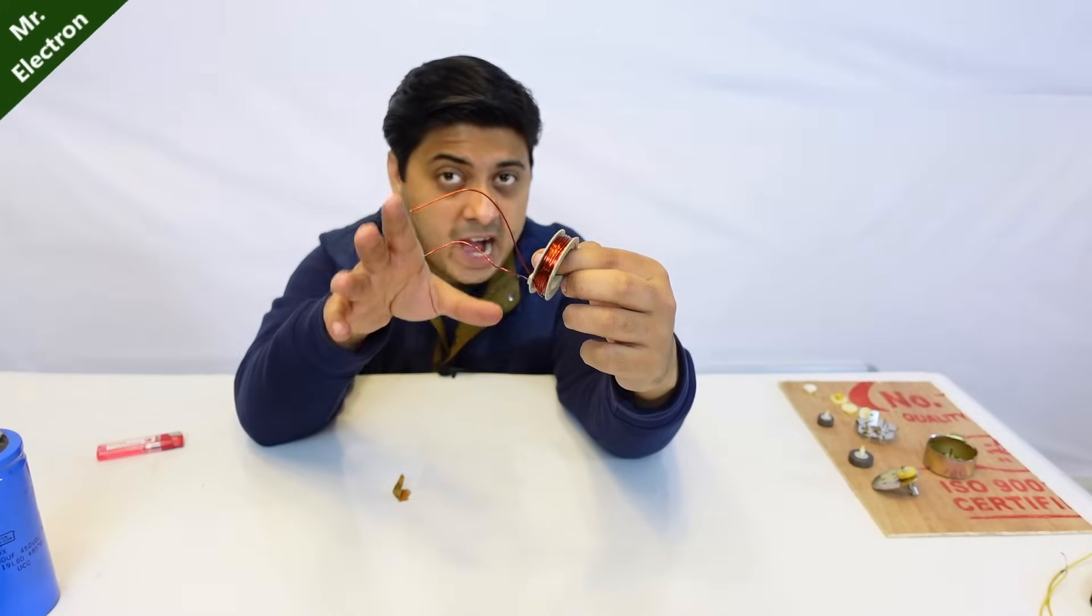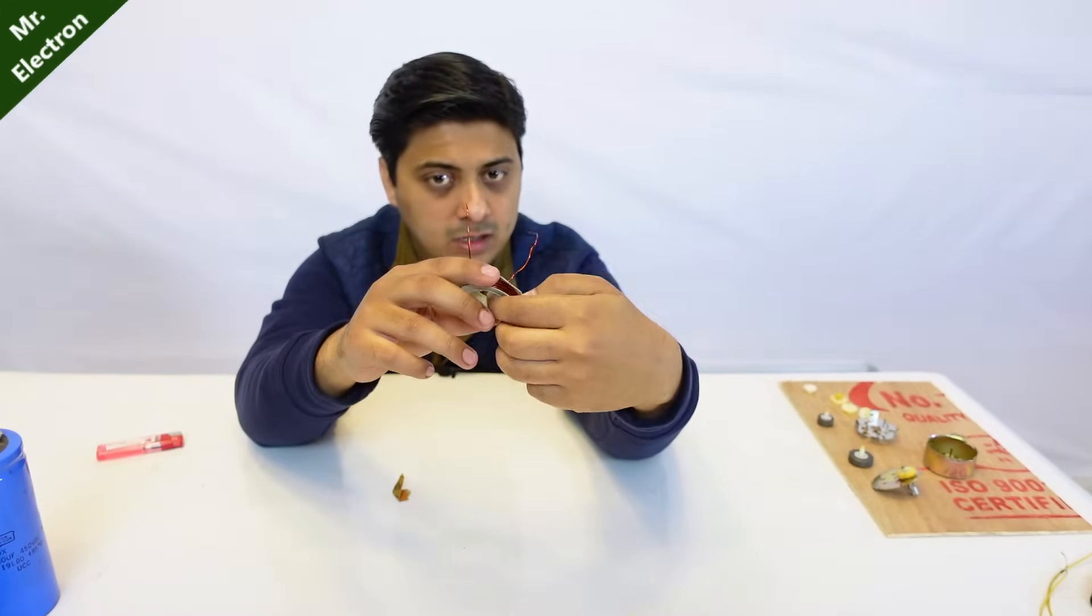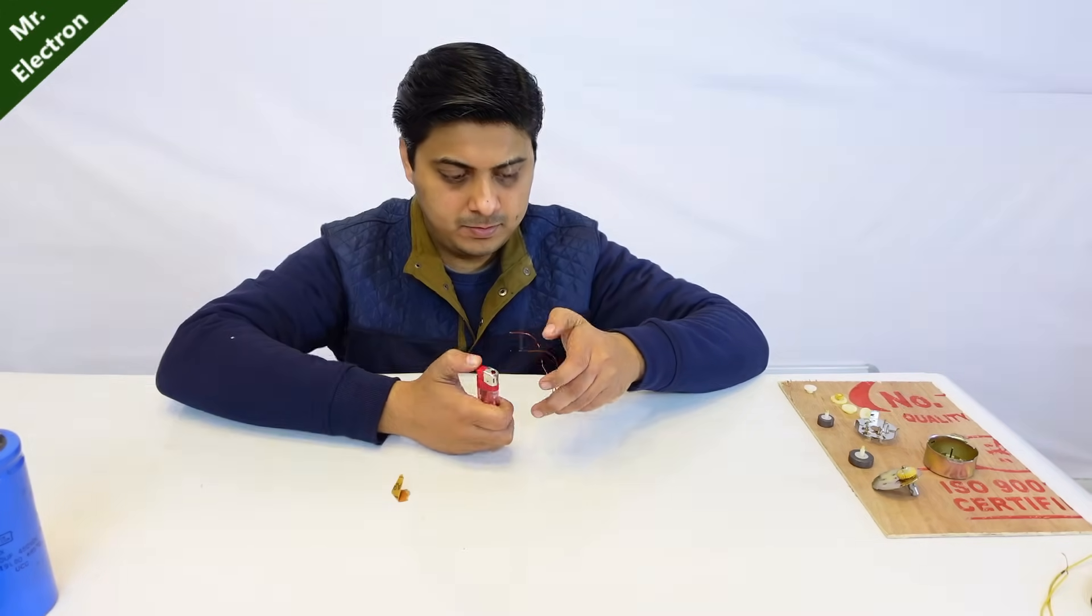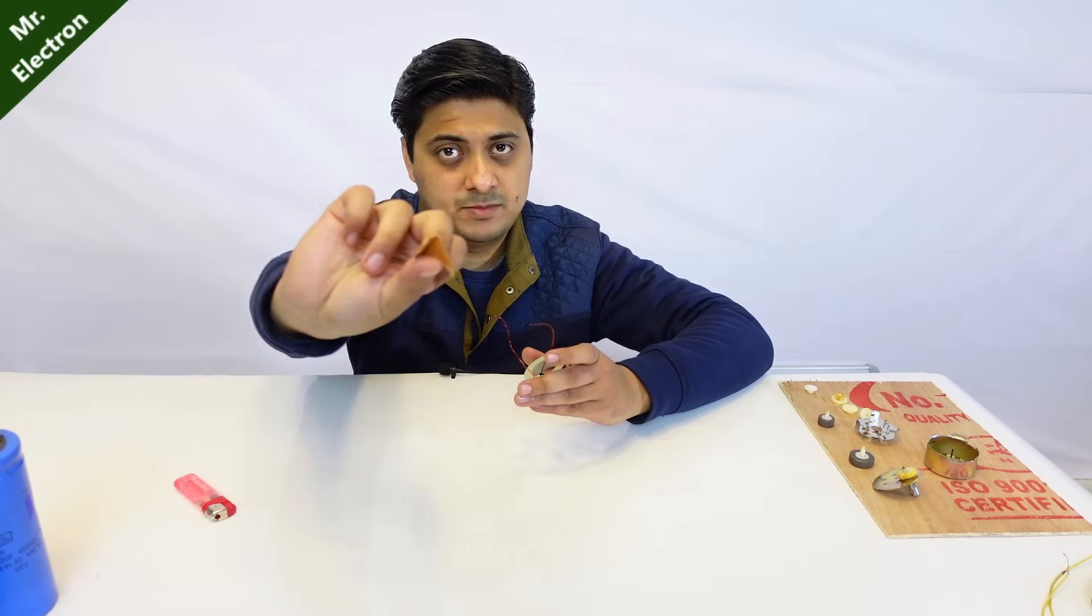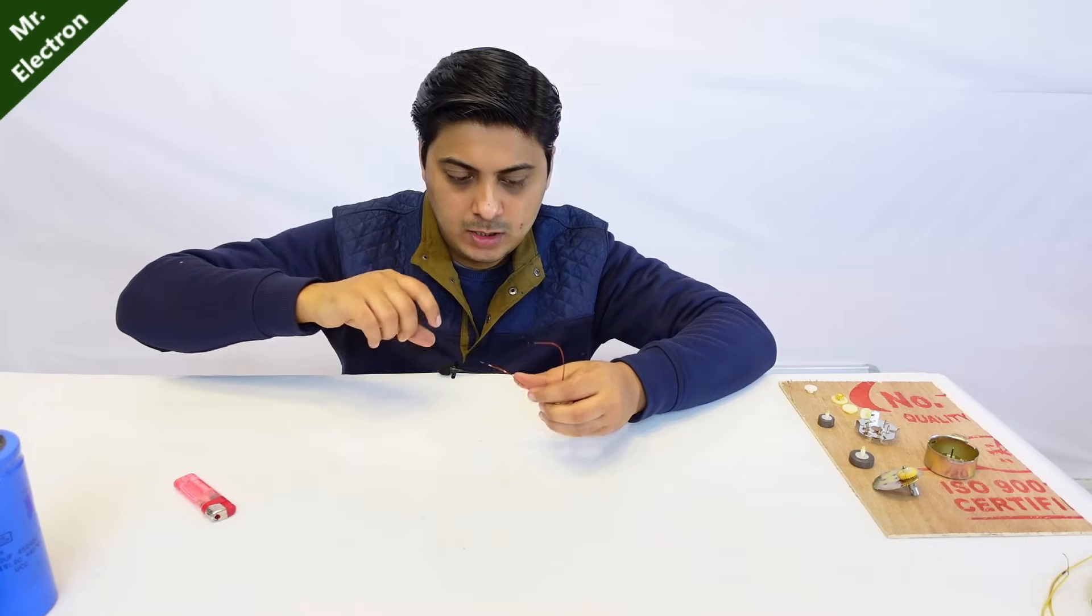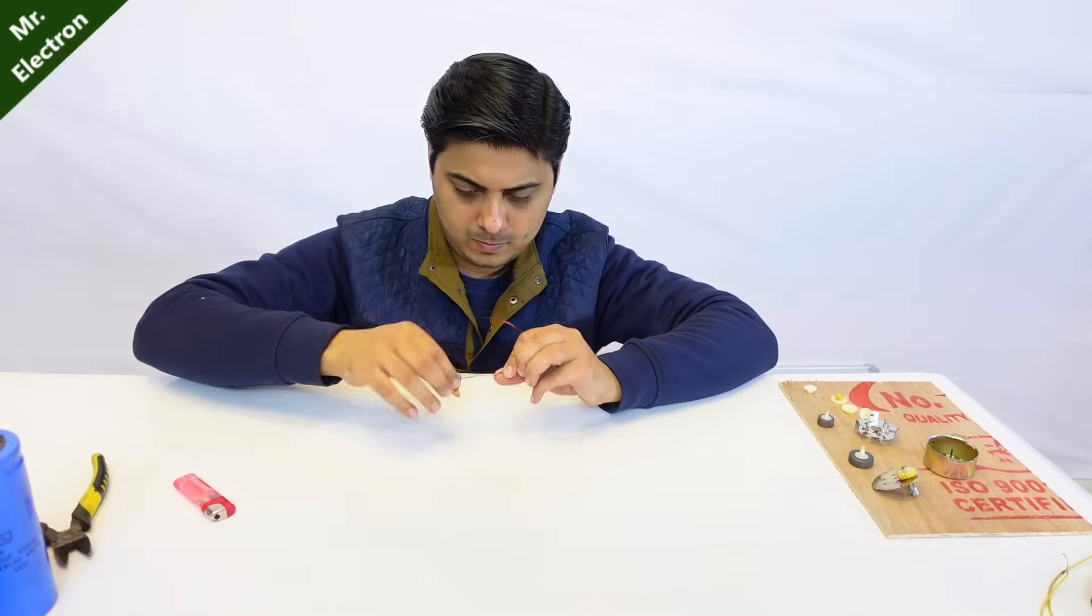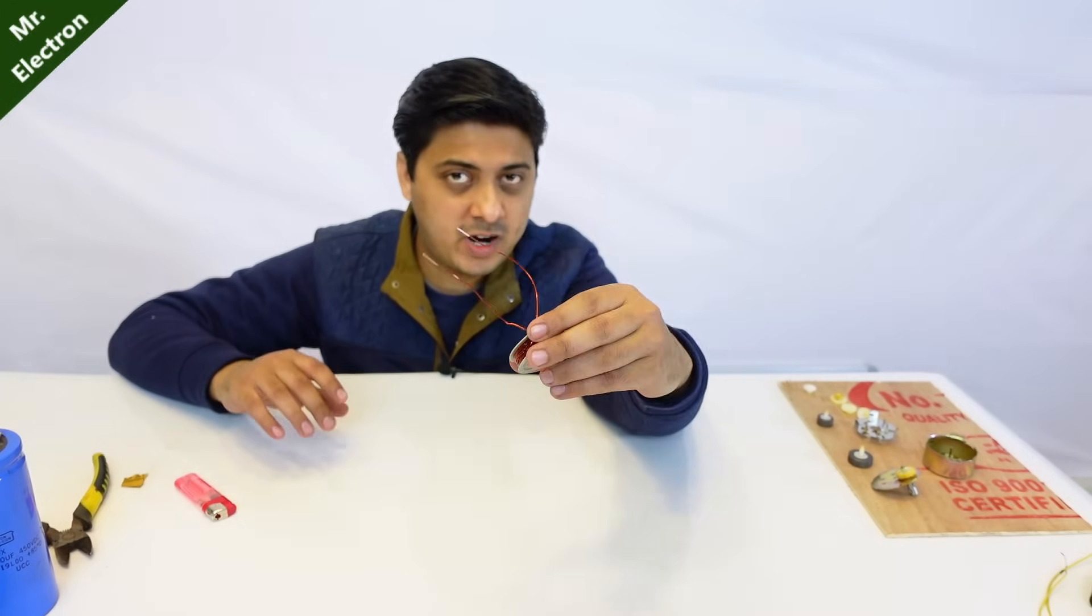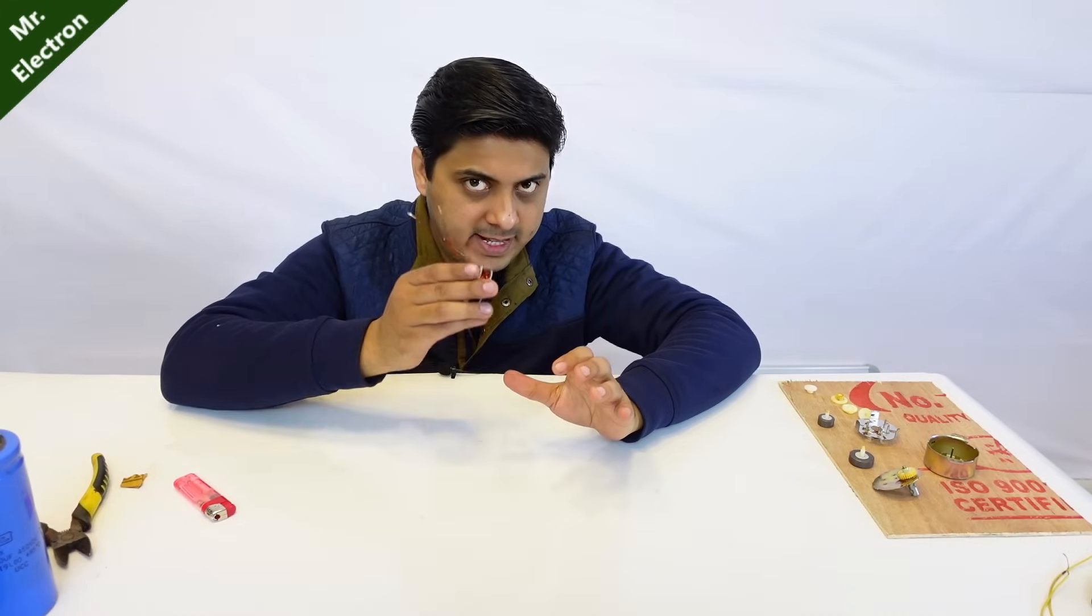So guys here as you can see that I've completed the rewinding part. I've completely filled the pulley which was initially holding only half the thin wires. Now these thick wires are completely filled with it. Let's remove the insulation here. After that some sandpaper. Oh it was really hot.